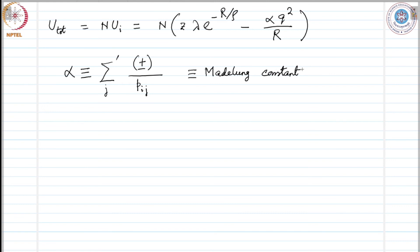The sum should include the nearest-neighbor contribution, which is just z. The value of the Madelung constant is crucial for the theory of ionic crystals because it gives the electrostatic interaction.